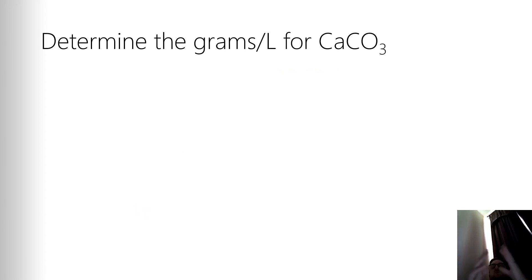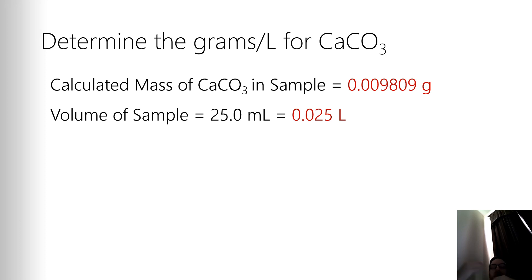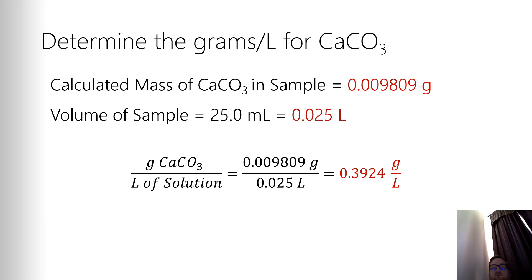My next step is to determine the concentration in terms of grams per liter. How many grams per liter of calcium carbonate are in that sample? Well, I need to know a couple of things. I need to know my calculated mass, which I just figured out, and I need to know the volume of the sample. Now, the volume of each of the samples was set at 25.0 milliliters. I can then convert that, because note, it says it wants it grams per liter. So I've got to convert 25 milliliters into liters. Again, you just divide it by 1,000. That gives you 0.025 liters. So that's a pretty straightforward calculation. Grams per liter, 0.009809 grams divided by 0.025 liters means that I have 0.3924 grams per liter of calcium carbonate.